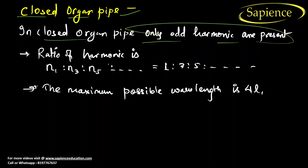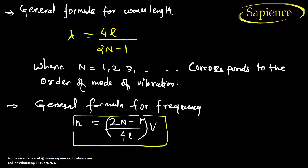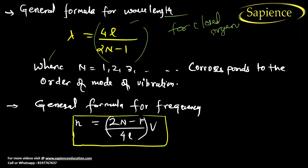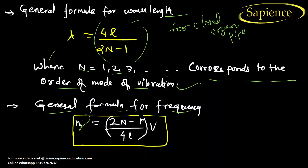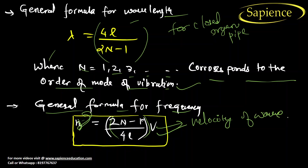For a closed organ pipe, the ratio of frequencies contains only odd harmonics: 1, 3, 5… The maximum possible wavelength is 4L. The general formula for wavelength is: lambda = 4L/(2n−1), where n = 1, 2, 3 corresponds to the order of the mode of vibration. The general frequency formula is: f = (2n−1)v/(4L), where v is the velocity of the wave.